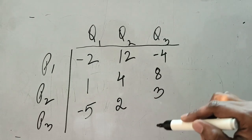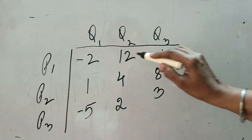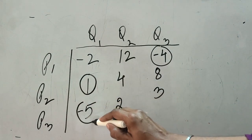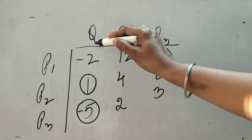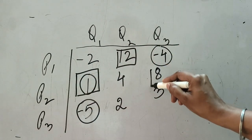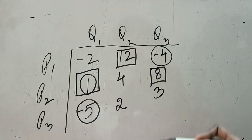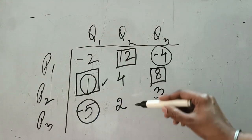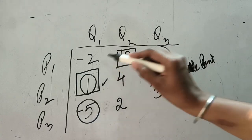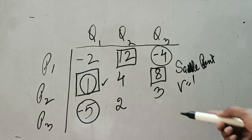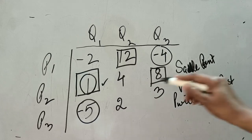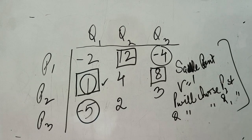Firm Q also has three strategies such as advertisement in radio, magazine, or newspapers. We check whether this is a pure strategy game. In the first row, the minimum is −4; in the second row, the minimum is 1; in the third row, the minimum is −5. Column-wise, the maximum values are 1, 12, and 8. The circle and square coincide on one element, so the saddle point exists. The value of game is 1, Firm P chooses strategy P2, and Firm Q chooses strategy Q1.